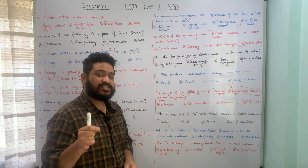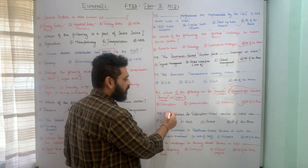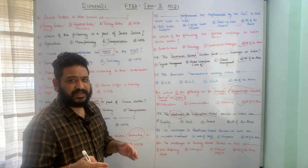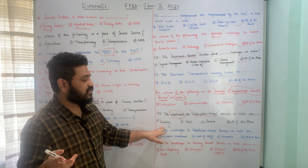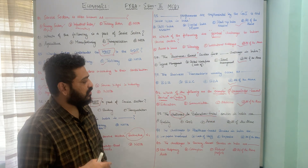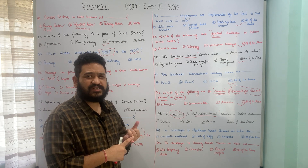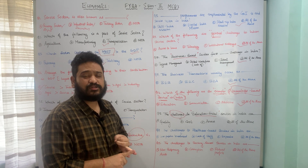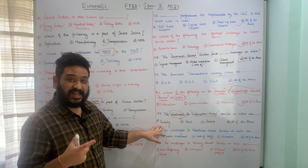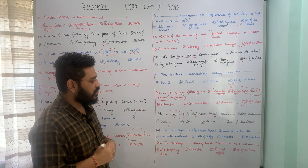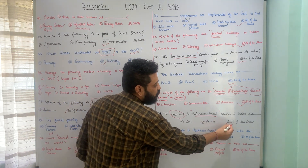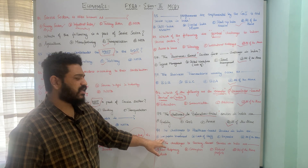What are the challenges to education-based services in India? Option A is the quality of service, B is the cost of service, C is access to the service, and D is all of the above. The cost of education is a big problem in India, as is its accessibility and quality. Therefore, option D, all of the above, is the correct answer to the challenges facing education-based services in India.